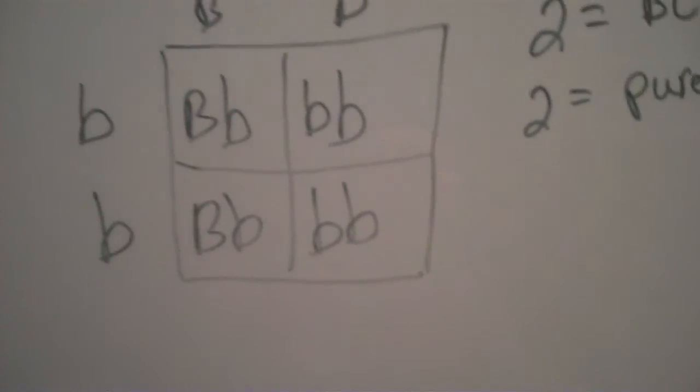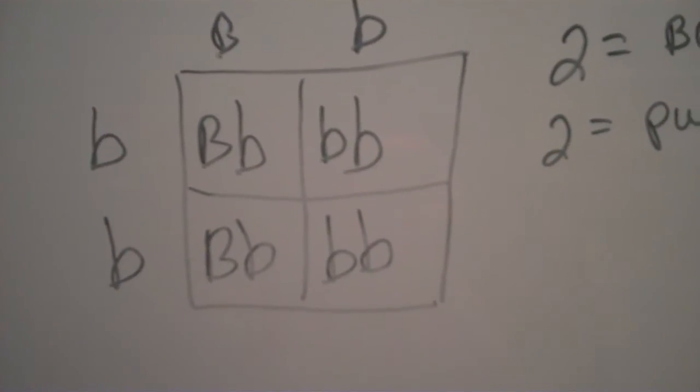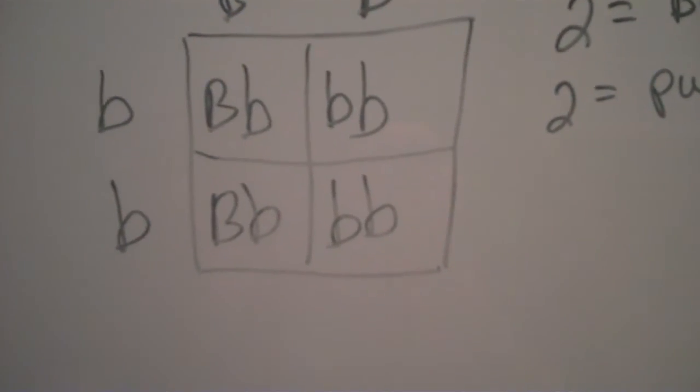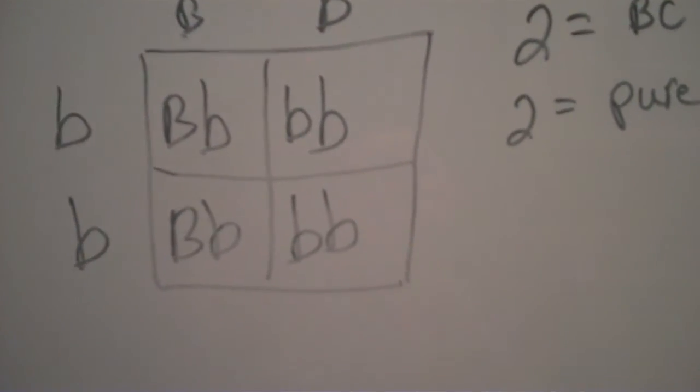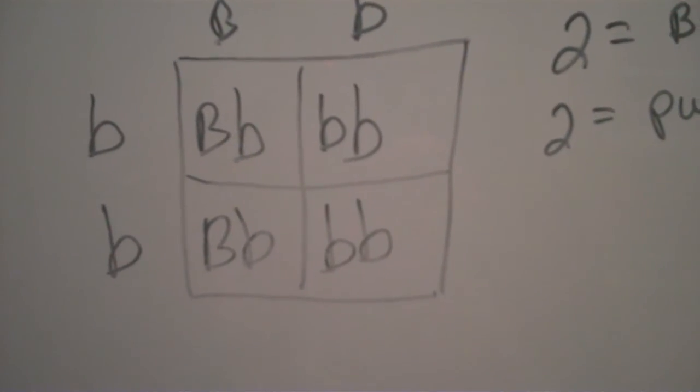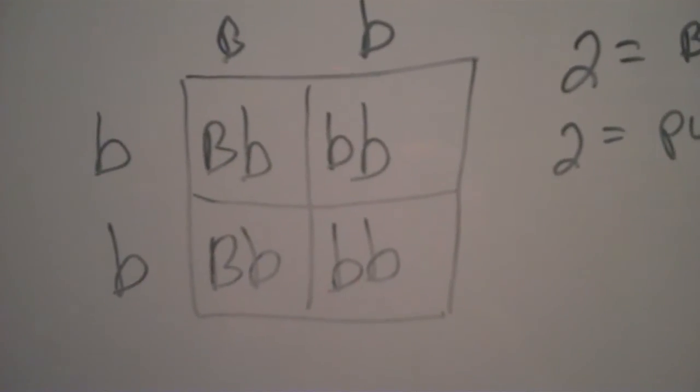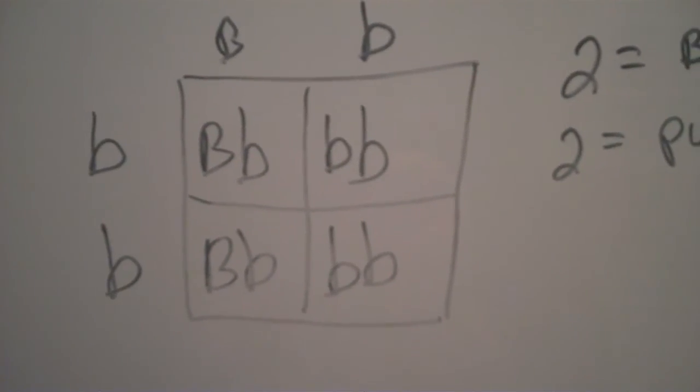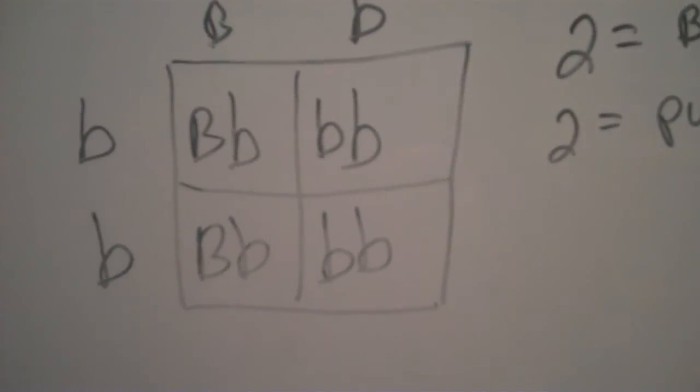So is it possible to get blue bars out of a blue check cock and a blue bar hen? The only way it is, is if the cock is split for blue bar and the hen is pure for blue bar. And that is how you set up a simple Punnett square.